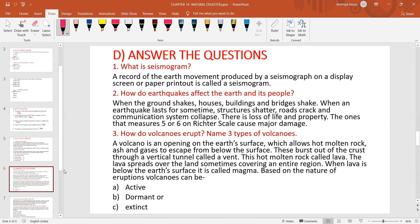How do volcanoes erupt? Name three types of volcanoes. A volcano is an opening on the earth's surface which allows hot molten rock, ash and gases to escape from below the surface. These burst out of the crust through a vertical tunnel called a vent. This hot molten rock called lava. The lava spreads over the land sometimes covering an entire region. When lava is below the earth's surface it is called magma. Based on the nature of eruptions, volcanoes can be active, dormant or extinct.